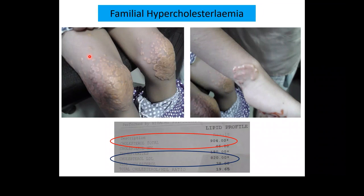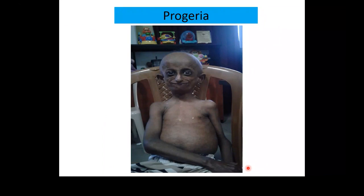Familial hypercholesterolemia shows thickened plaques and hugely elevated cholesterol levels in children. Progeria involves premature aging and again requires cardiac assessment.